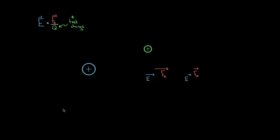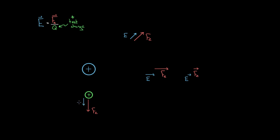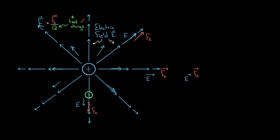We take our positive test charge and move it around. If I want to know the electric field at a given spot, I ask which way the electrical force points on that test charge. To the right — since it's being repelled by the positive charge. Moving the test charge elsewhere, the repulsion still points to the right, just smaller. Keep mapping this out, and you realize the field always points radially outward from a positive charge.